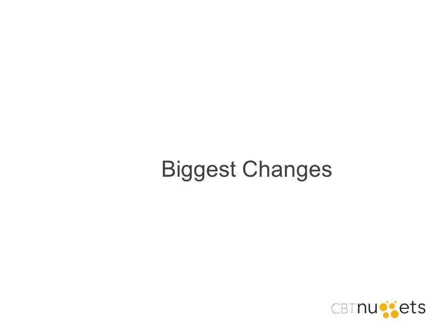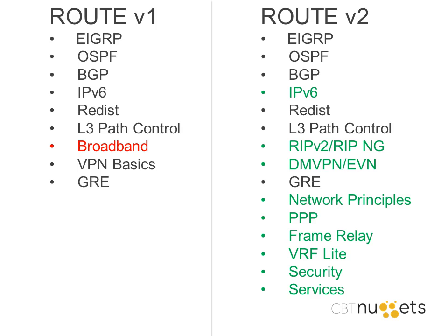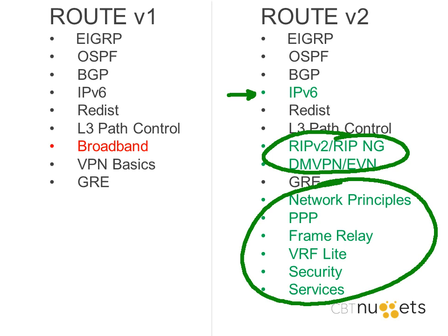Let's pick it up with the first of three exams: Route. That does indeed feature the most changes in any of the three exam areas. On the left-hand side of the screen, you can see version 1 — notice EIGRP, OSPF, BGP, IPv6, redistribution, Layer 3 path controls, and broadband in red. Broadband is the only topic domain from Route version 1 that exits stage left, and then we have VPN basics and GRE. On the right-hand side, we have version 2 for Route. IPv6 is shown in green to indicate that you're going to go deeper than in version 1, so it's really a new topic for version 2 because of the depth involved. All of those additional subjects in green are additions compared to version 1.